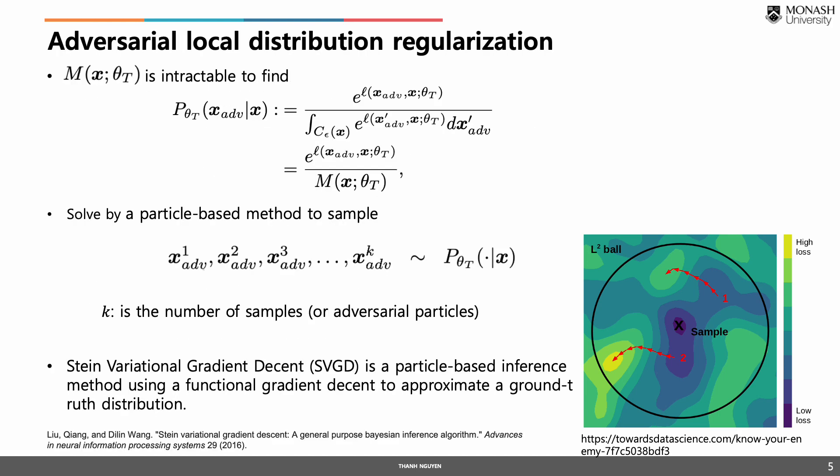The normalization M is intractable to compute in the equation below, so we use a particle-based method to sample x₁ᴬᴰⱽ, x₂ᴬᴰⱽ, ..., xₖᴬᴰⱽ from the distribution, where k is the number of adversarial particles. The particle-based method we use in our paper is Stein Variational Gradient Descent (SVGD).